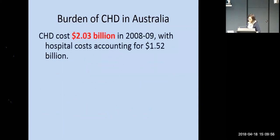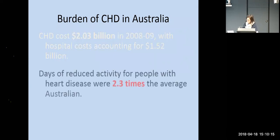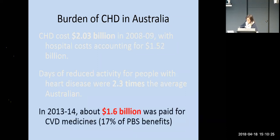More people are surviving, but that doesn't mean we don't have a significant burden from coronary heart disease. About 10 years ago — and these numbers would probably be more now — it was costing billions of dollars in health costs in Australia. About three-quarters of that is hospital costs for treating people with coronary heart disease. People with heart disease are also less active, impacting work productivity, and they consume considerable amounts of medication, accounting for further billions of dollars in treatment costs.